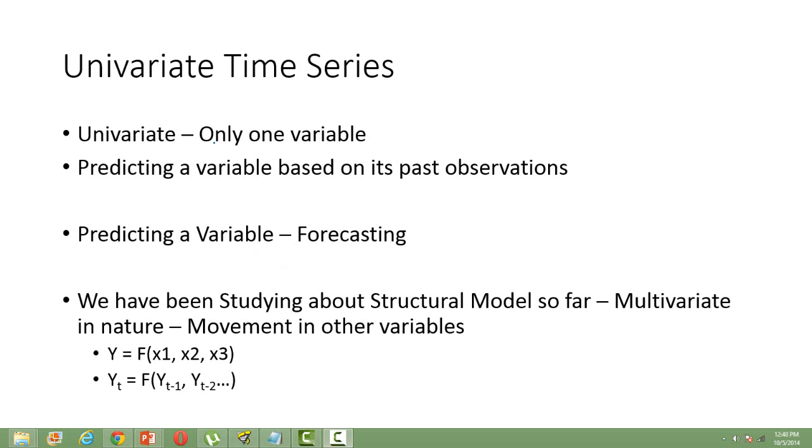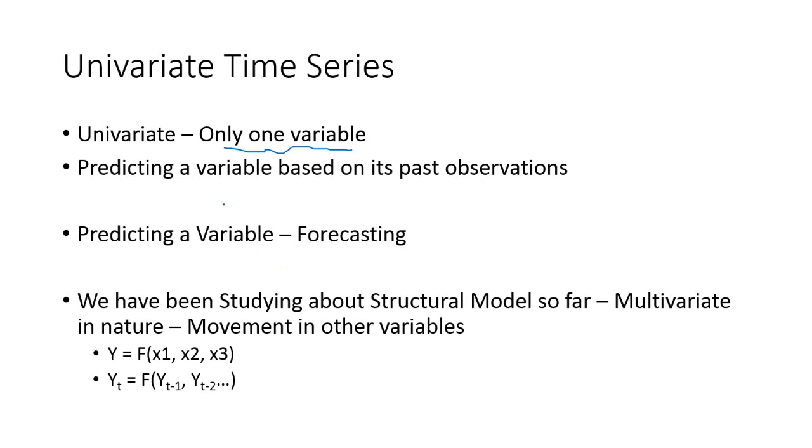Univariate is just one variable and then what we do is that we predict the variable based on its past observations. So we don't use any other explanatory variables or independent variables, like the way we do in regression models. We rather use only the past observations of the same variable to predict the variable.